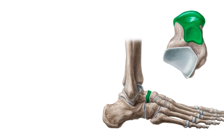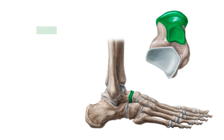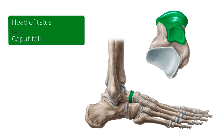The head of the talus, highlighted in green here, is convexly oval in shape and articulates distally with the proximal end of the navicular bone. The image at the top shows a right talus from a plantar view, with the medial side on one side and the lateral side on the other, with the body connecting to the calcaneus.